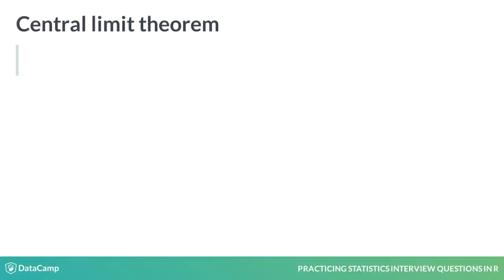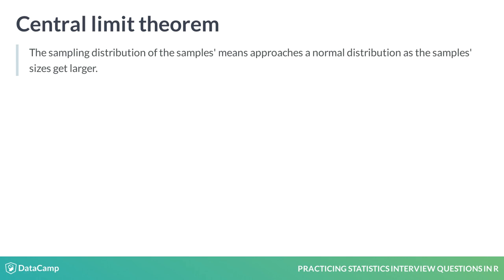The Central Limit Theorem states that the sampling distribution of the samples' means approaches a normal distribution as the sample sizes get larger. Sounds complicated, doesn't it?